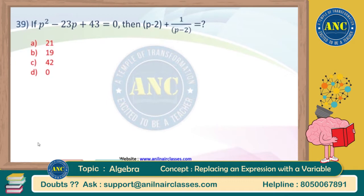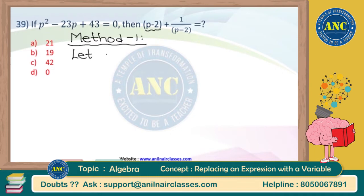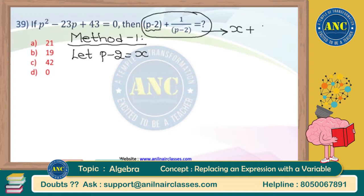I will teach you Method 1 and Method 2. Whichever method you feel comfortable with, you can pick that. The question asks for (p - 2) + 1/(p - 2). I will call p - 2 as some variable x. So this entire expression becomes x + 1/x — that is what we need to find.